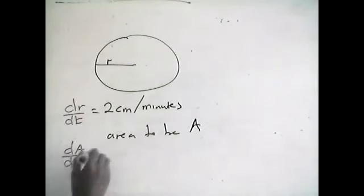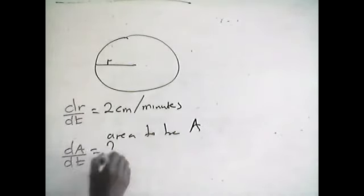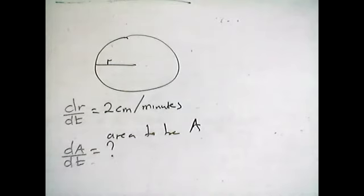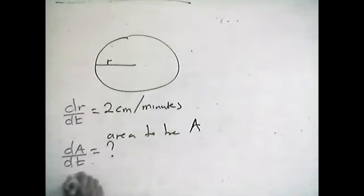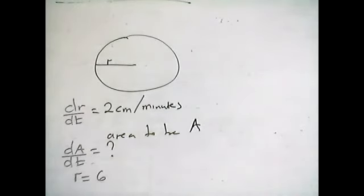That's what is expected from us. With the information that we've been given, how do we go about finding that? There's another piece of information: we've been given the value of R to be 6 centimeters.